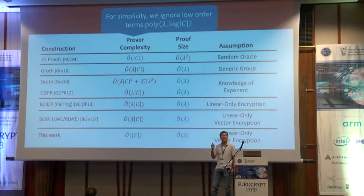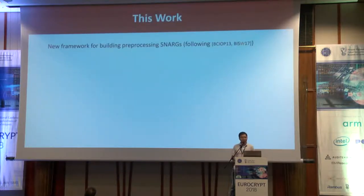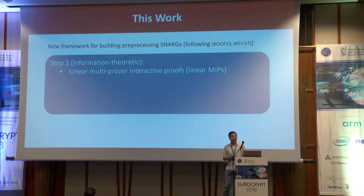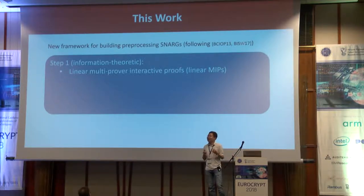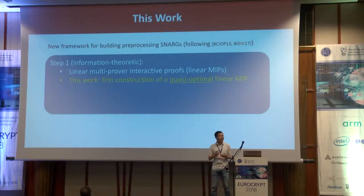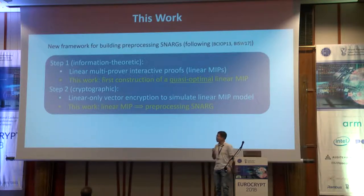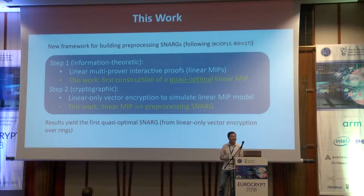The main focus of this work is to build the first quasi-optimal succinct non-interactive argument system — one that simultaneously minimizes both the prover complexity and the proof size. To summarize, the main contribution of this work is a new framework for building preprocessing SNARKs. This follows and extends the frameworks by Bitansky et al. as well as our own framework from EuroCrypt last year. Our framework follows two main steps: first, we identify a suitable information-theoretic primitive — a linear multi-prover interactive proof, or linear MIP — and in this work we give the first quasi-optimal construction of a linear MIP. Second, we leverage a cryptographic tool, namely linear-only vector encryption, to compile this linear MIP into a preprocessing SNARK. Combining a quasi-optimal linear MIP with a linear-only vector encryption scheme, we obtain the first quasi-optimal SNARK from the concrete cryptographic assumption of linear-only vector encryption.